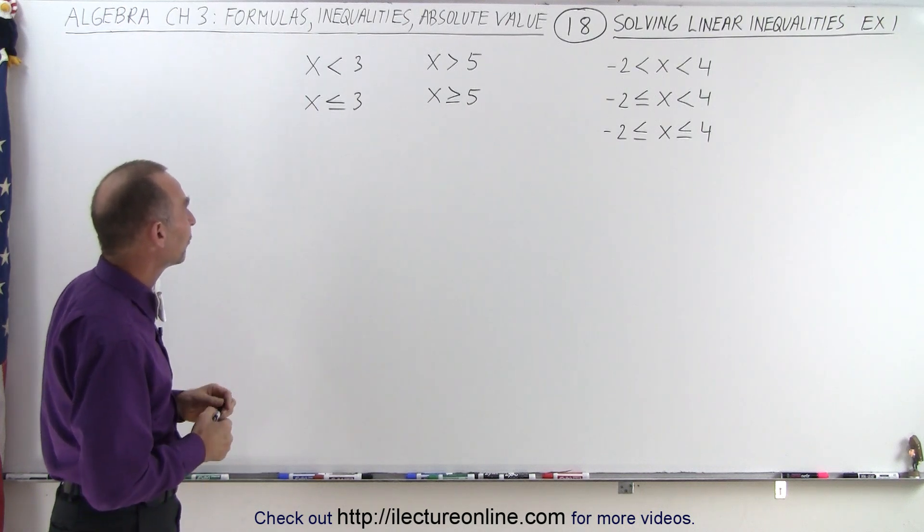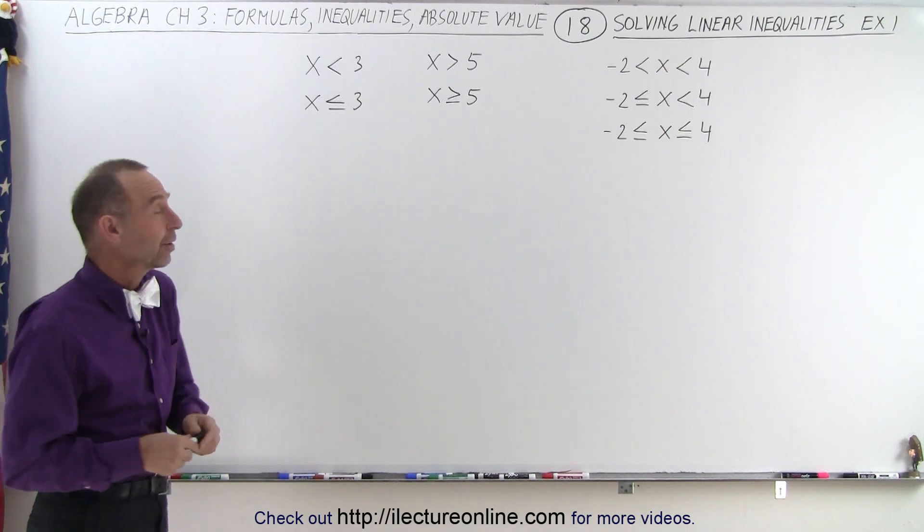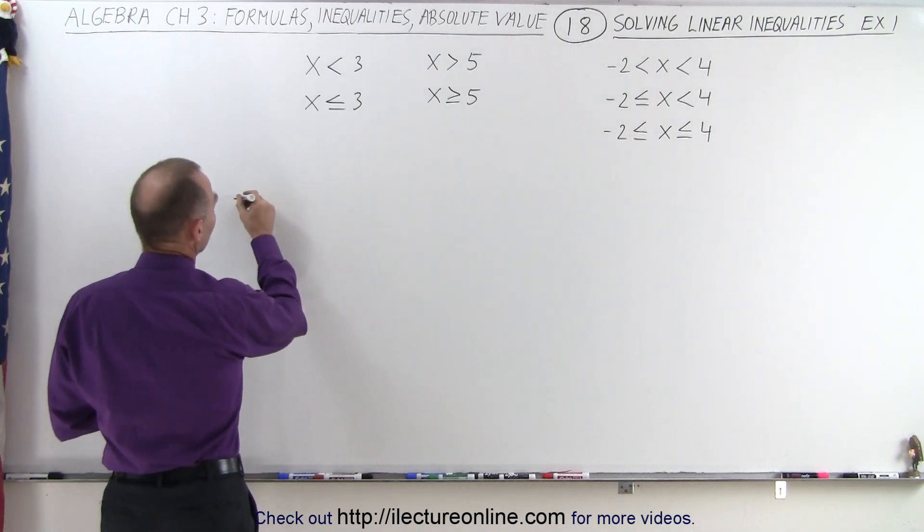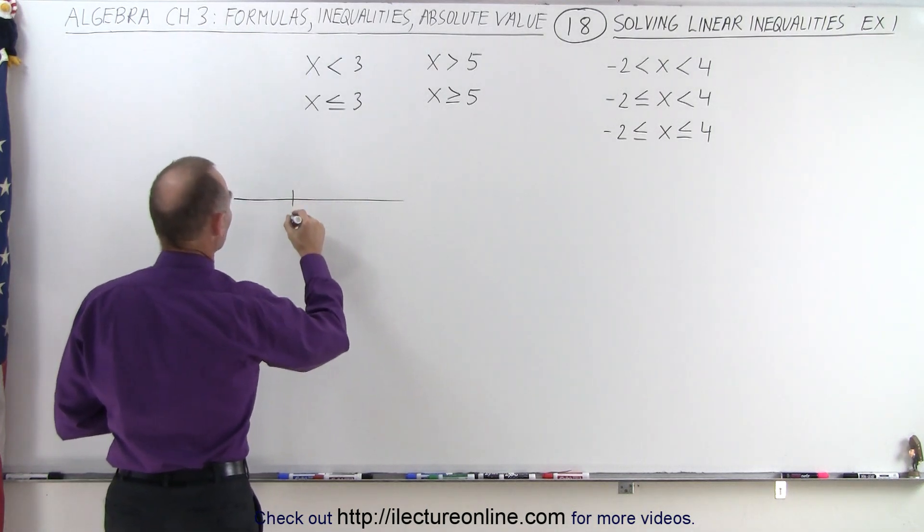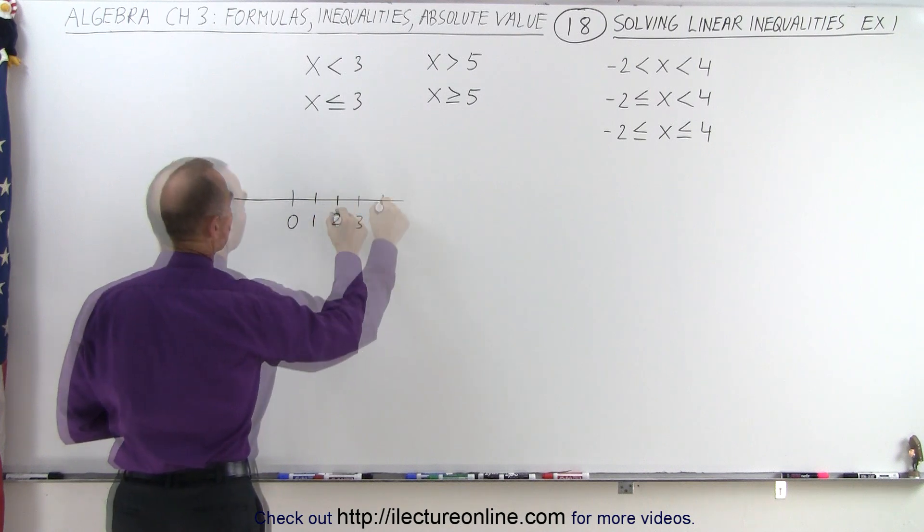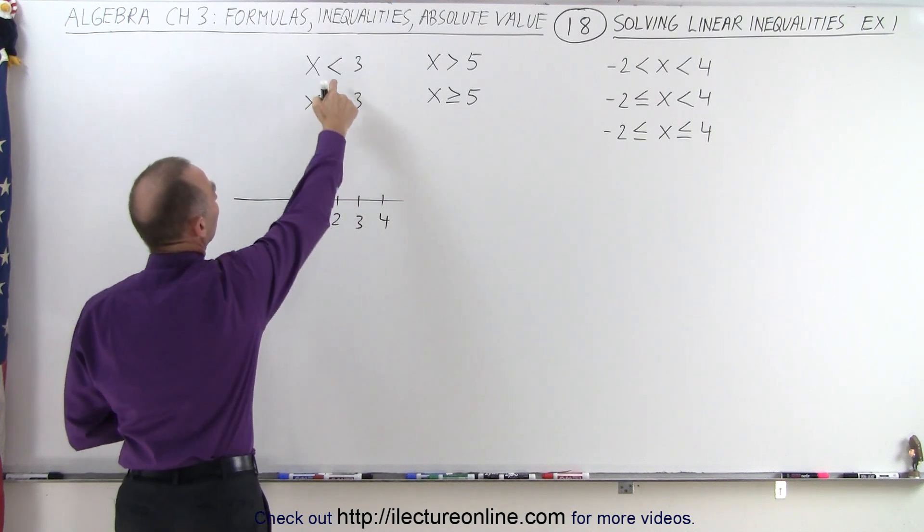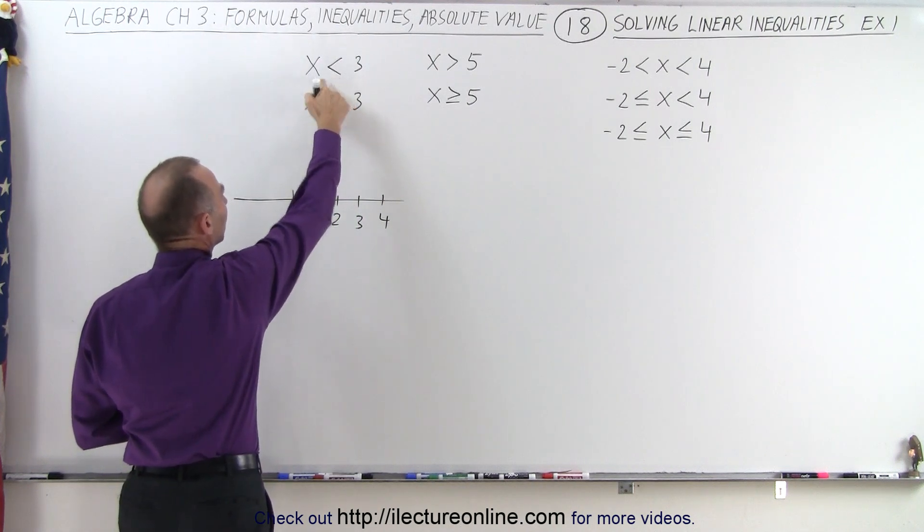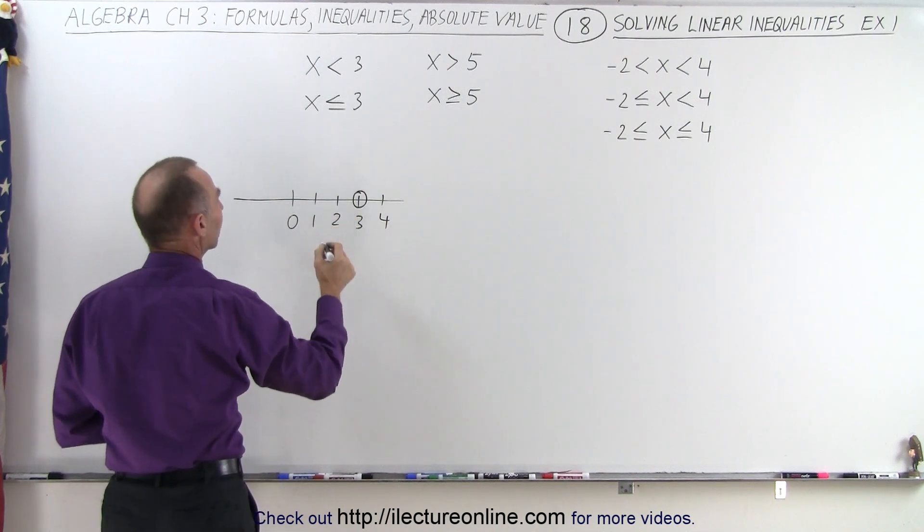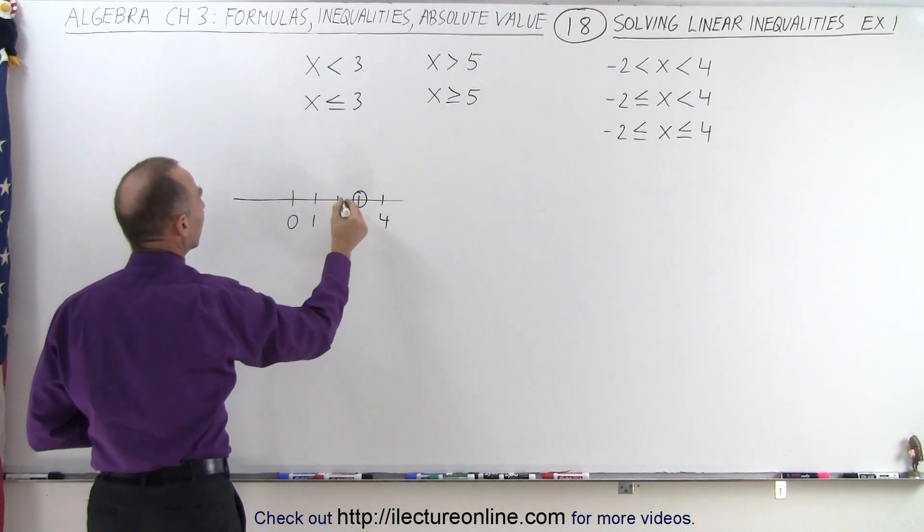When we are told to find all the values for x that are smaller than 3, we can best do that using a number line. We draw a number line, draw some points on it, and since we're not including the number 3, we draw a little circle around it without filling it in, and then we point to the left.